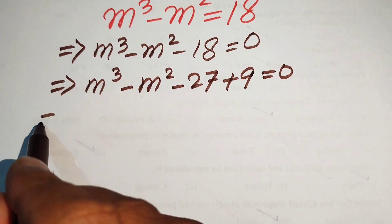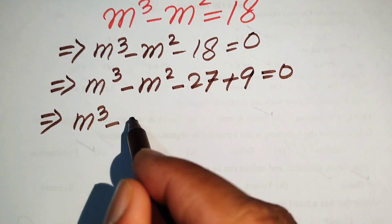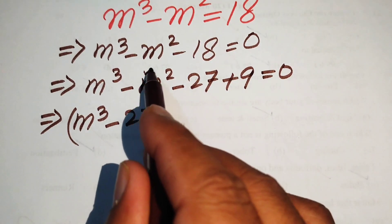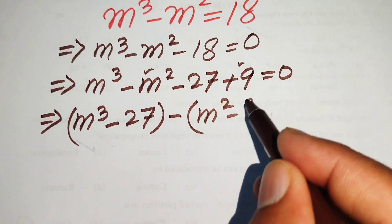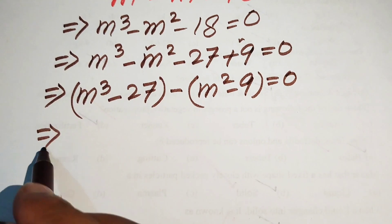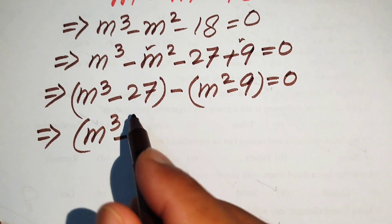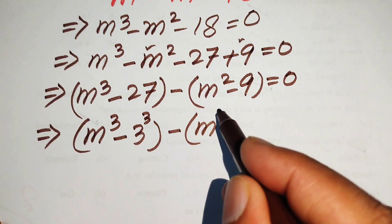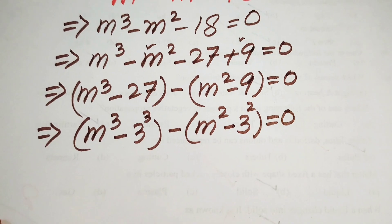In the next step we rewrite the equation as m cubed minus 27, and we take a common minus sign from the remaining two terms, writing it as minus times of m squared minus 9 equals 0. We then rewrite 27 as 3 cubed and 9 as 3 squared.